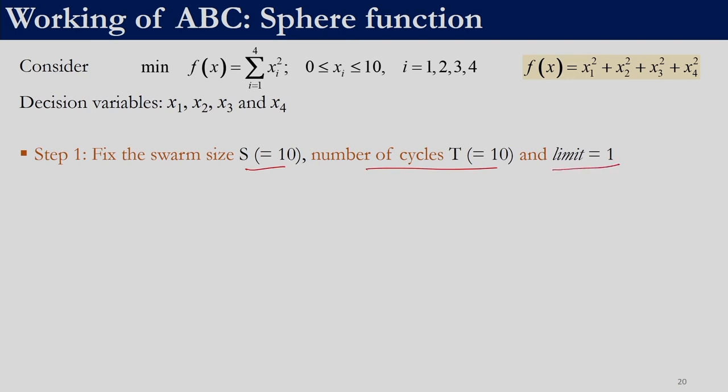The swarm size will tell us the number of food sources, the number of employed bees, and the number of onlooker bees. The number of cycles will tell us when to complete our procedure, and the parameter limit helps in determining when the scout phase is to be implemented. The limit parameter should ideally be taken as NP × D.